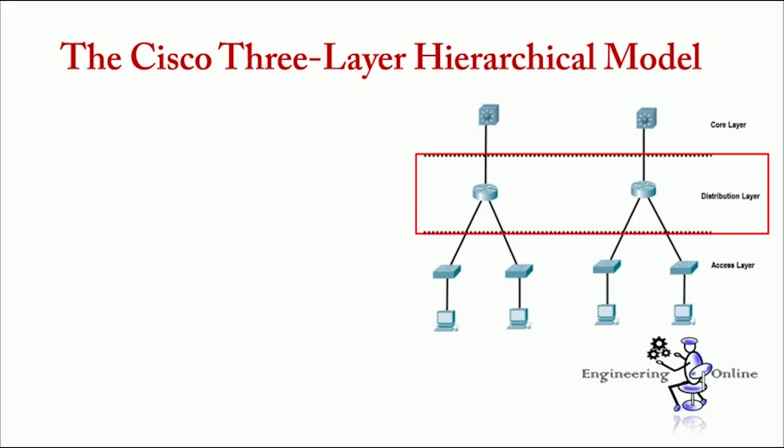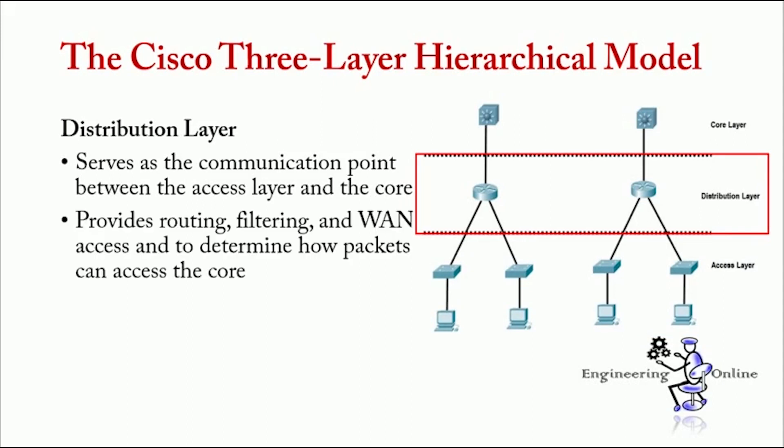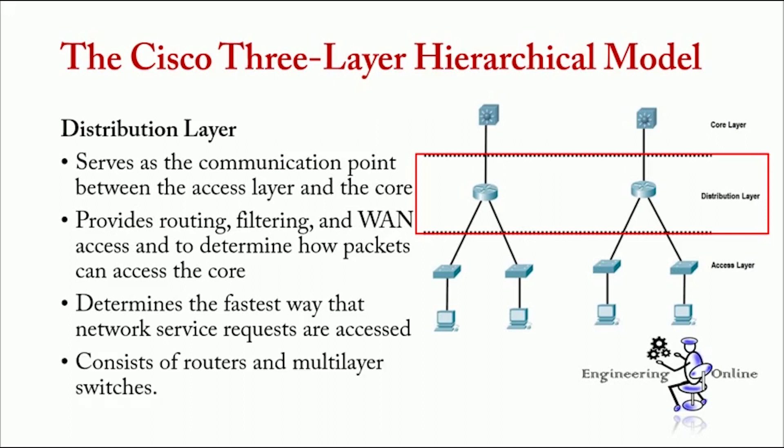Then we have distribution layer. It serves as the communication point between the access layer and the core. Its primary function is to provide routing, filtering, and WAN access to determine how packets can access the core. It also determines the fastest way the network service requests are accessed, for example, how a file request is forwarded to a server. And this layer usually consists of routers and multi-layer switches.